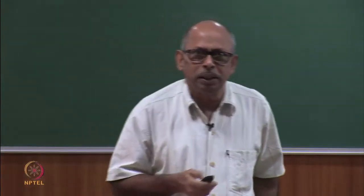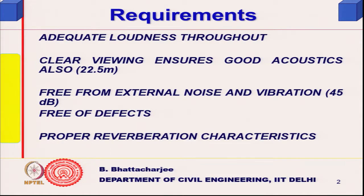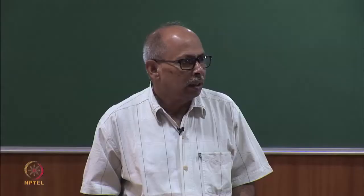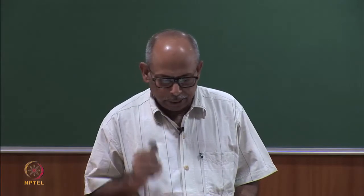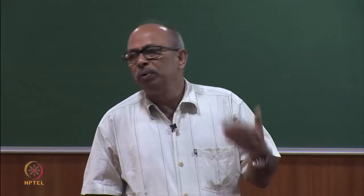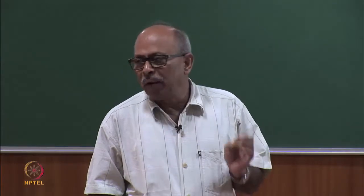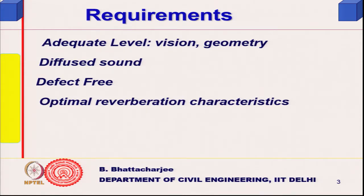22.5 meters is considered the appropriate distance. There should be no external noise and the space should be free of acoustic defects. Most important is proper reverberation characteristics. The first requirement is adequate level of vision, achieved by geometrical design — the shape and profiling of ceiling and walls. Sound should be as diffused as possible, meaning there must be sufficient reflected sound, and the space should be defect-free, with optimal reverberation characteristics.